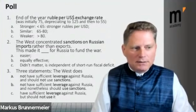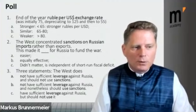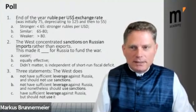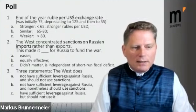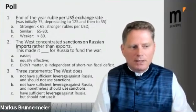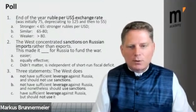So below 65 means fewer rubles needed to buy one dollar. The majority — about 55% — think it will stay similar between 65 and 80, about 25% think it will be weaker. The consensus is fairly stable, slightly leaning weaker but not strongly so in either direction.